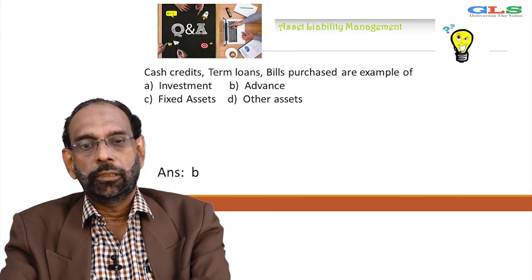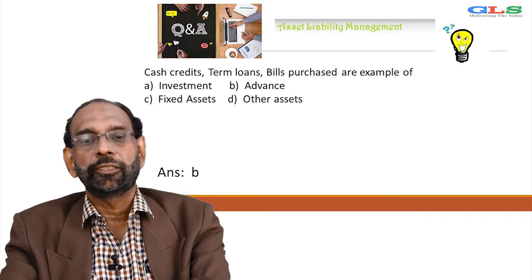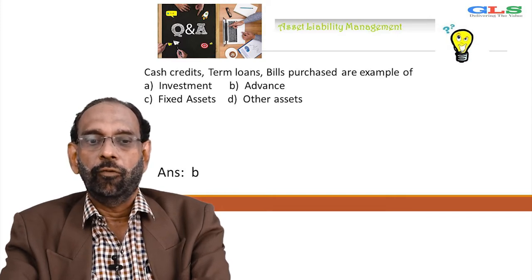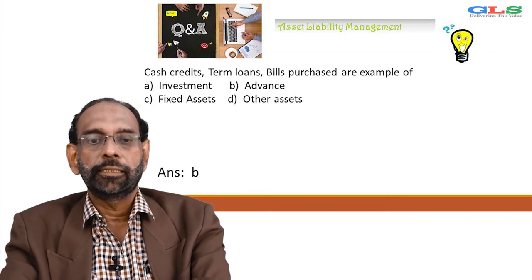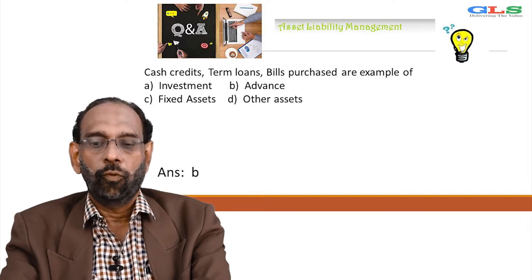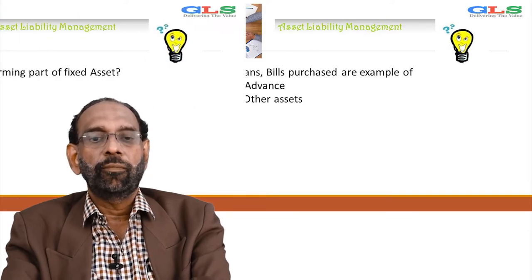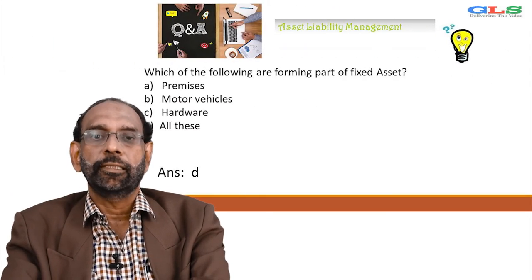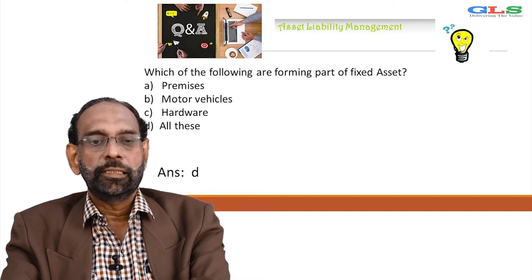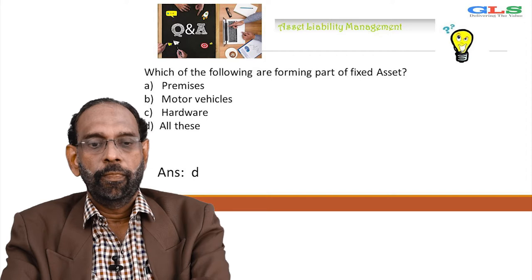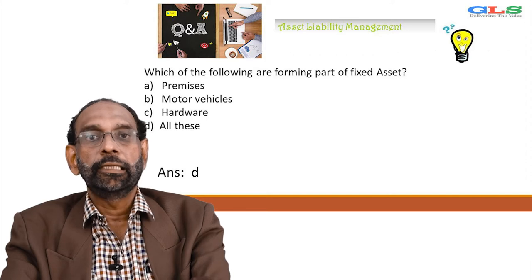Cash credits, term loans, bills purchase are examples of — A: investment, B: advance, C: fixed assets, D: other assets. Answer is B, that is advance. Which of the following are forming part of fixed assets? A: premises, B: motor vehicles, C: hardware, D: all of the above. Answer is D.